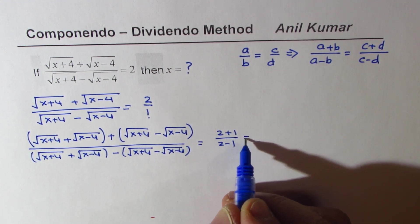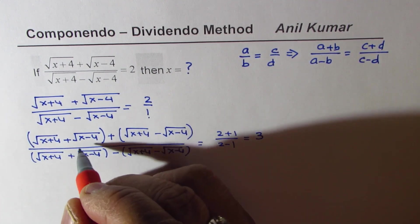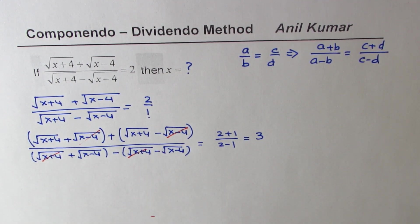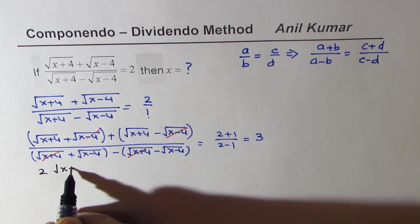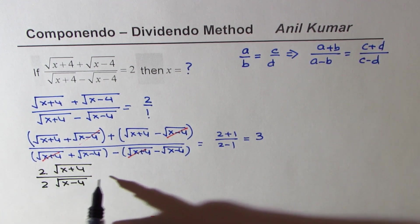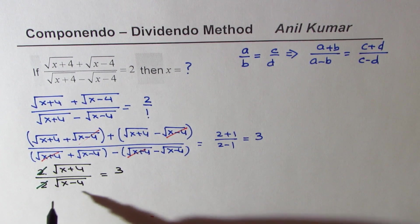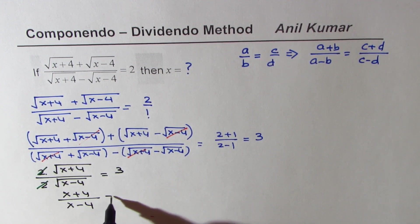In the new numerator, the terms square root of x minus 4 cancel, leaving 2 times square root of x plus 4. In the new denominator, the terms square root of x plus 4 cancel, leaving 2 times square root of x minus 4. So we have 2 times square root of x plus 4 over 2 times square root of x minus 4 equals 3. Cancelling the 2s and squaring both sides gives x plus 4 over x minus 4 equals 9.